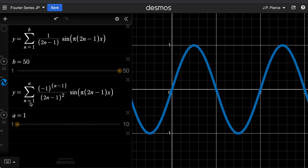What's going to happen is the first term, which is n equals 1, the first term would be negative 1 to the 0. So you'd get a positive 1 in the numerator. So it would be 1 over 1 sine 1 pi x, which is what is graphed here.